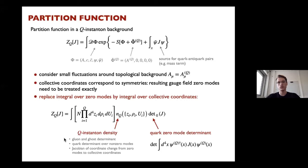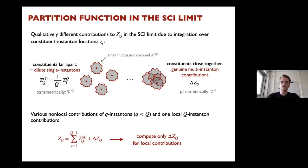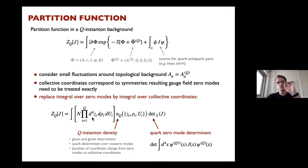The partition function can be written formally with an integral measure over collective coordinates of individual constituents, and an instanton density summarizing contributions: the functional determinant for gluons, the quark determinant over non-zero modes, the Jacobian from the coordinate change, and then the zero-mode determinant, which only couples to the source.